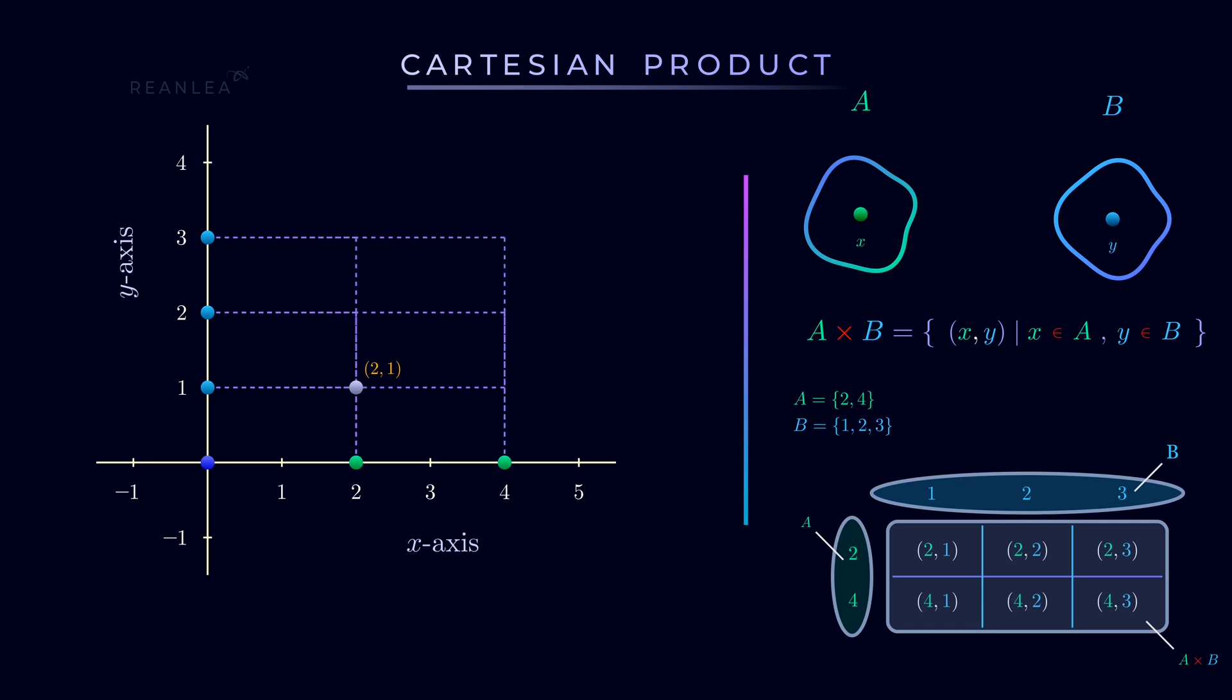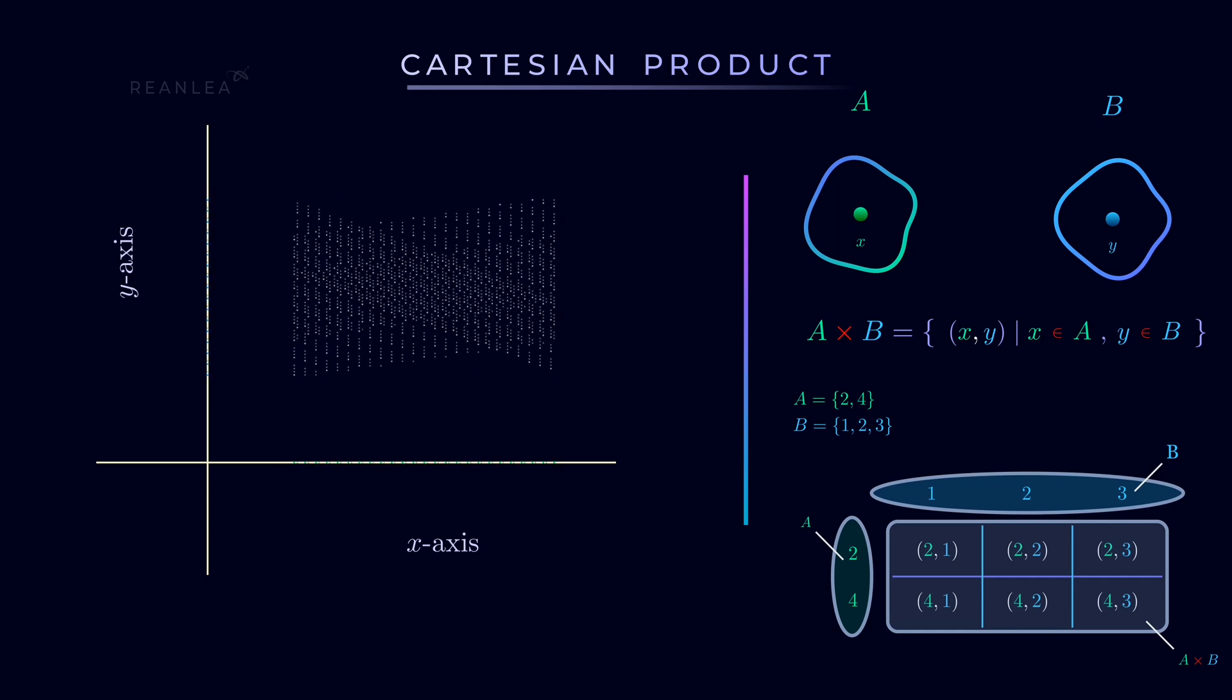In similar fashion, all the other elements of the set A cross B can be expressed as a point of intersection between two such lines. And obviously, we can consider A and B to have more points and we'll have all the elements of their corresponding Cartesian product in this way.